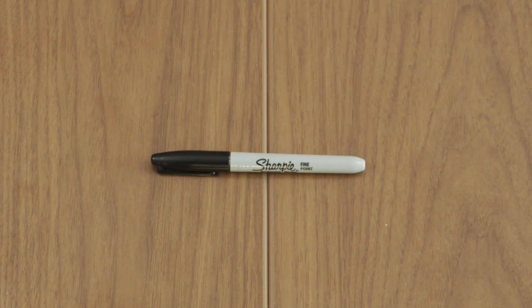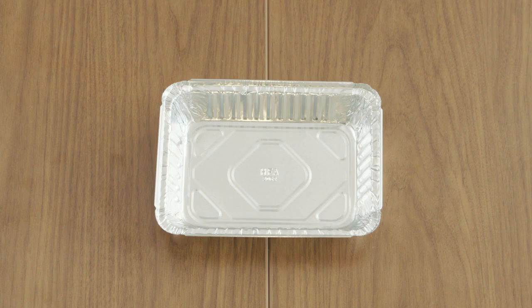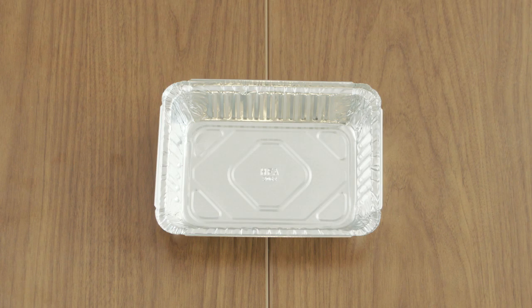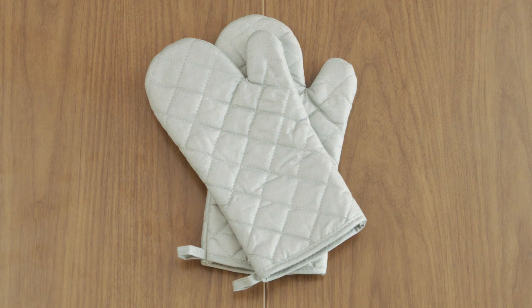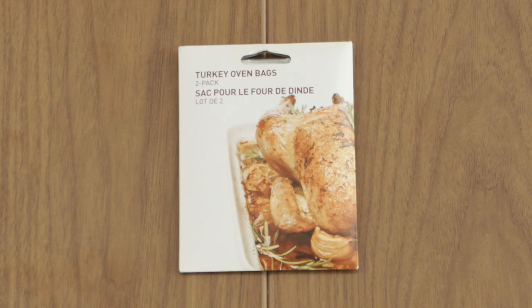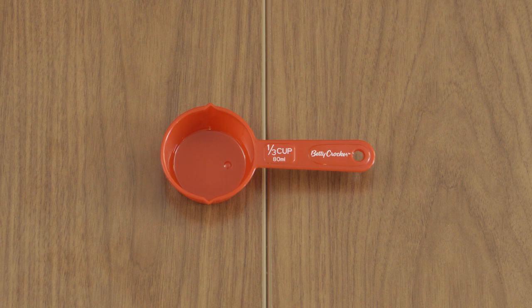You'll also need an oven thermometer, felt tip marker, aluminum foil, one large aluminum foil cake tin, paint brush, oven mitts, two large oven bags, and measuring cups and spoons.